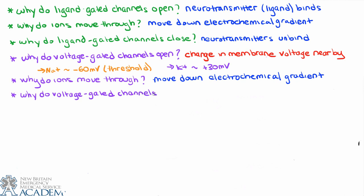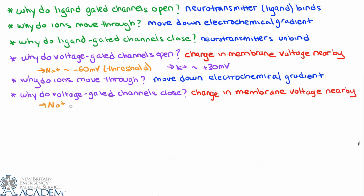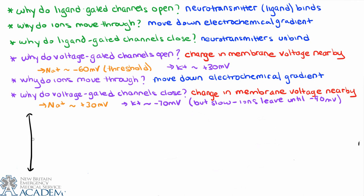Why do voltage-gated ion channels close? For the same reason that they open — a change in membrane potential nearby. Sodium channels are active from minus 60 millivolts to plus 30 millivolts, and at plus 30 they're no longer able to stay open. Potassium channels are active from plus 30 millivolts to about minus 70 millivolts. At minus 70 the channel wants to close, but it's a little slow, so ions can leak out until about minus 90 millivolts. So considering depolarization, repolarization, and hyperpolarization together — we increase the membrane potential in the positive direction for depolarization, decrease it back to resting for repolarization, and anything beyond minus 70 to something more negative is hyperpolarization.